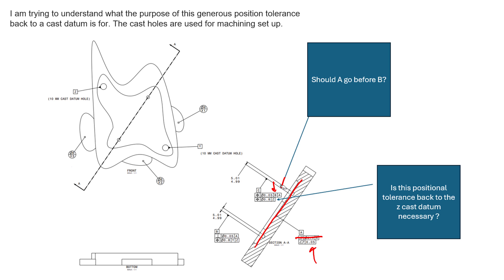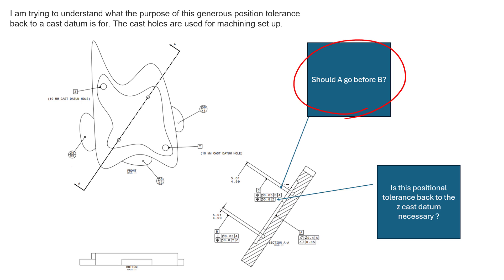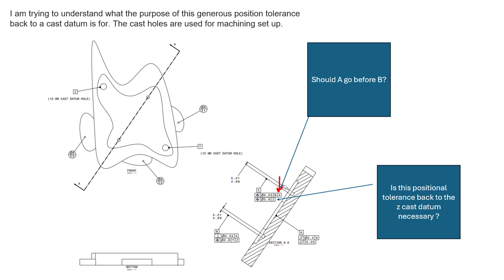Also, B can come before A in a feature control frame — just because A comes before B in the alphabet does not mean it has to come first. By listing B first and then A, we're saying that when locating this hole we care about location and orientation to B before A. In this specific scenario, A is not really doing anything — all of the rotation and orientation that B controls for this hole overrides what A can do, as A can only control translation in a direction this hole doesn't need.